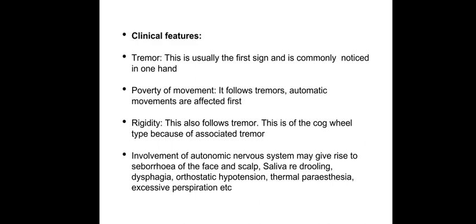There is difficulty in turning from side to side, changing posture in bed, or standing up from a sitting posture. Buttoning and combing are practically impossible. Due to rigidity, in the early stage jerks are brisk, but gradually they cannot be elicited. Cramp or muscle pain is quite common due to rigidity. Handwriting becomes cramped and tends to become progressively smaller.